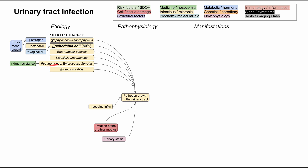Pseudomonas, Enterococci, and Serratia are associated with increased drug resistance, so a patient that's hospitalized and on antibiotics for a while might be predisposed to these three. Proteus produces a lot of ammonia, which can lead to struvite stones and staghorn calculi. The ammonia also has a specific smell, so you might have particularly pungent urine in UTIs caused by Proteus mirabilis.